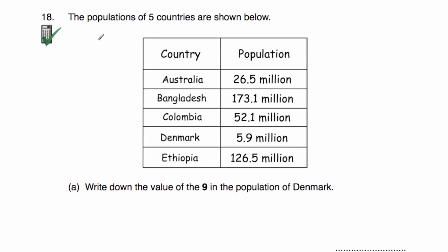Question number 18 is a calculator question. We've got the populations of five countries: Australia 26.5 million, Bangladesh 173.1 million, Colombia 52.1 million, Denmark 5.9 million, and Ethiopia 126.5 million. We've been asked to write down the value of the digit 9 in the population of Denmark. The population of Denmark is 5.9 million, which is 5,900,000. So the value of the digit 9 would be 900,000.